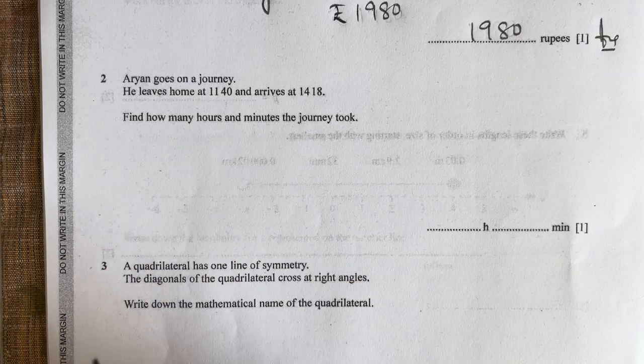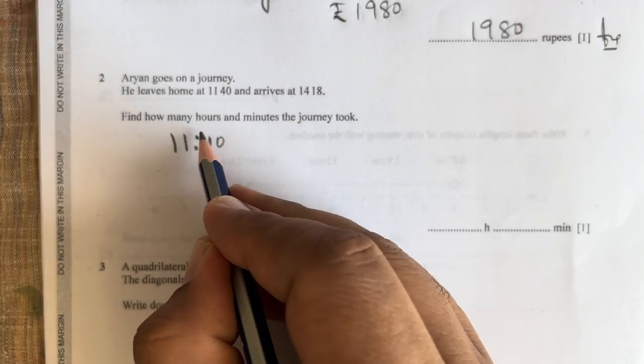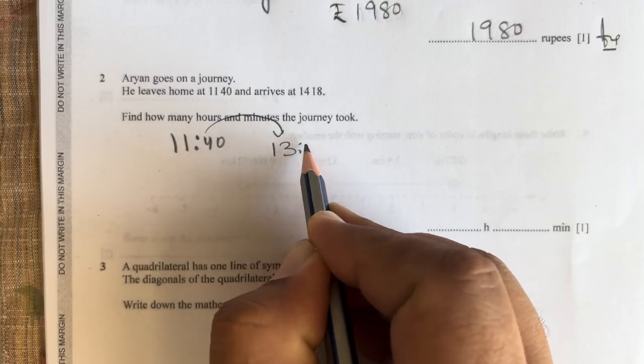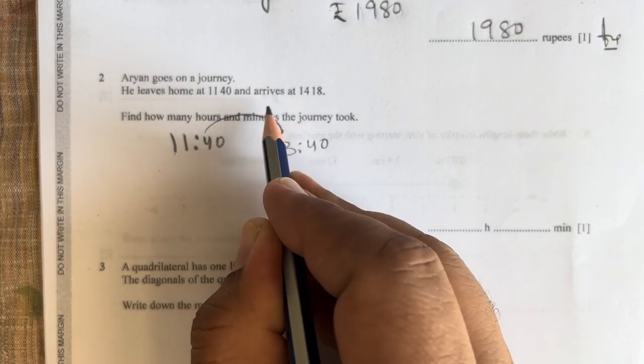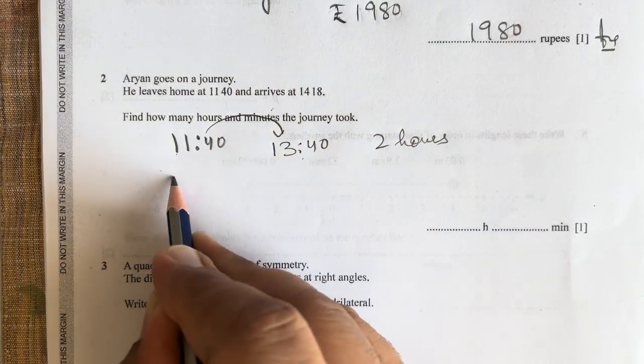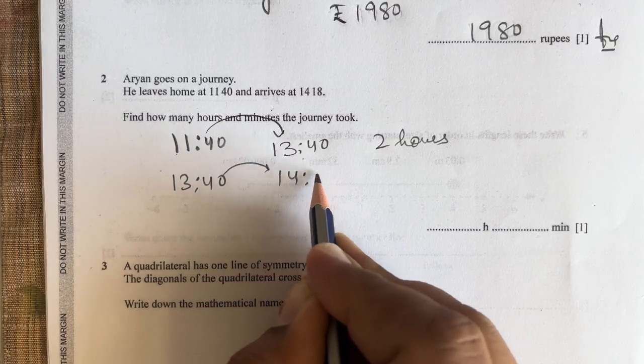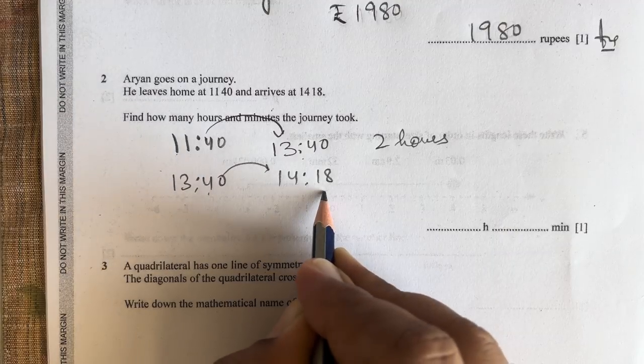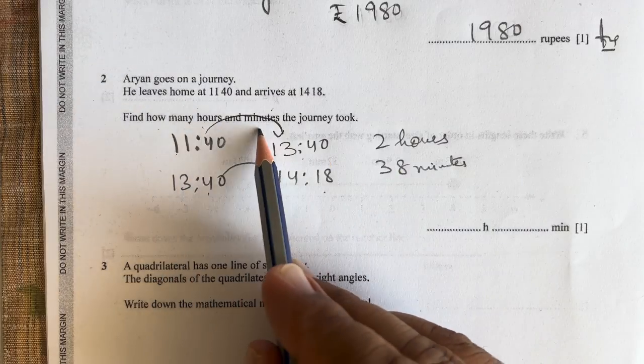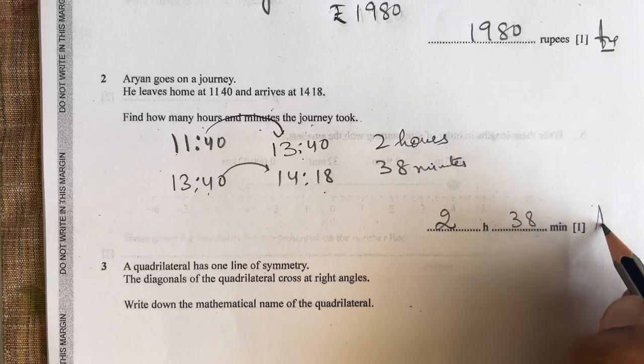Aryan goes on a journey. He leaves home at 11:40 and arrives at 14:18. Find how many hours and minutes the journey took. He leaves home at 11:40. From 11:40 to 13:40 is 2 hours. Then from 13:40 to 14:18 is 38 minutes.